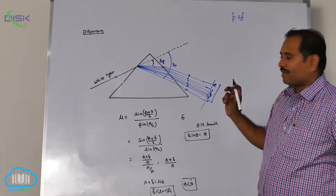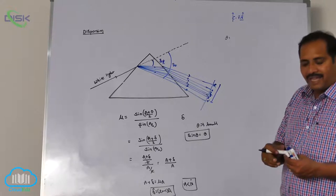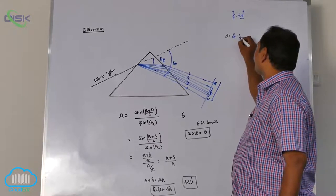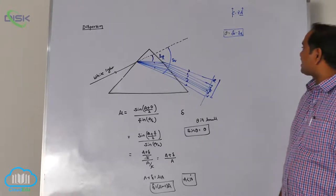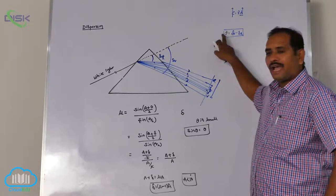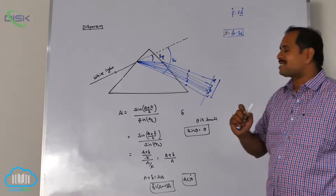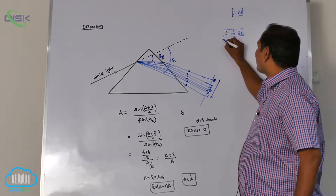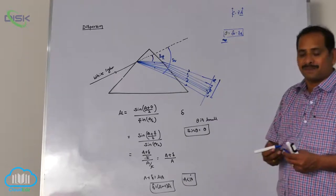Angular dispersion is denoted by theta. Many people confuse this — in books you find δV − δR, described as the difference in deviation between red and violet. But angular dispersion is defined as the angle between any two emergent colors, not only violet and red. The pair with maximum angular dispersion is violet and red.